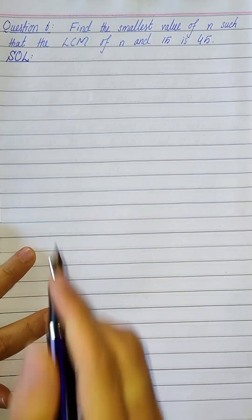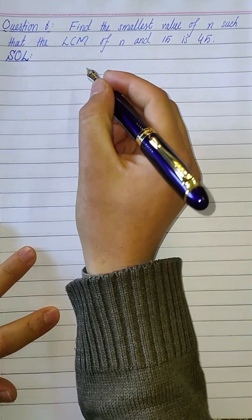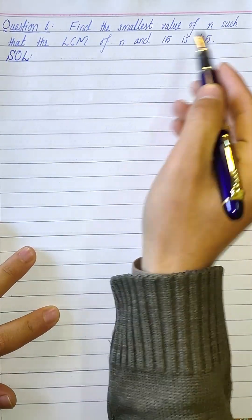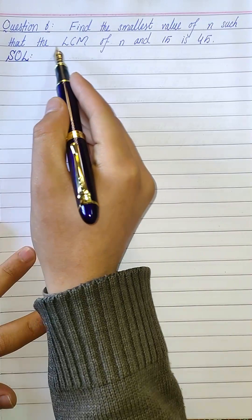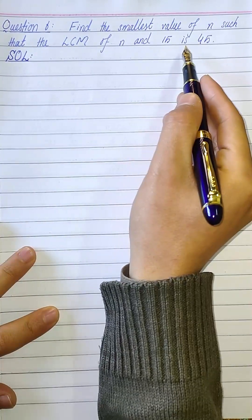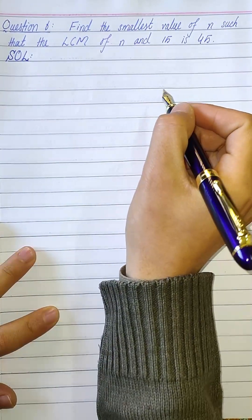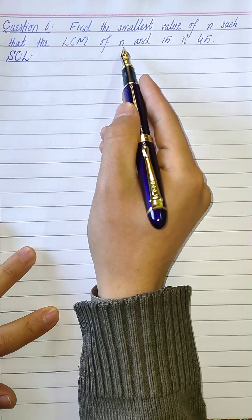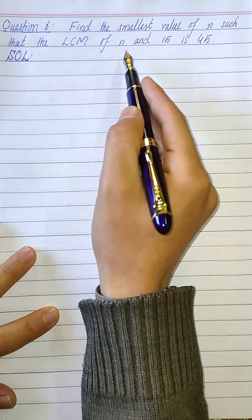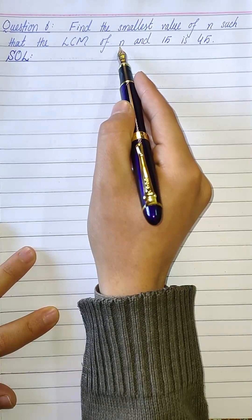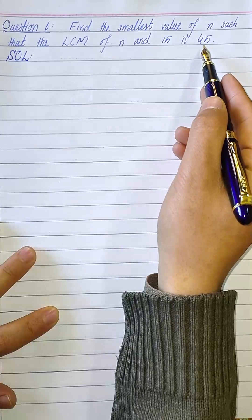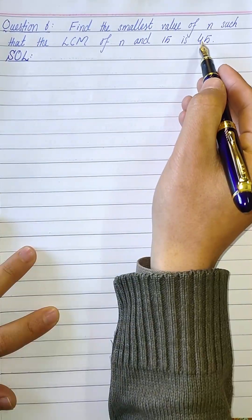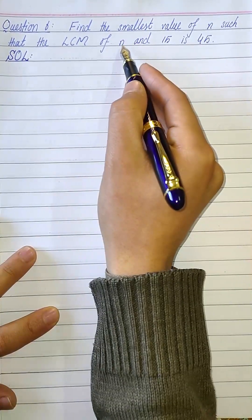Question number six from exercise 1b: find the smallest value of n such that the LCM of n and 15 is 45. In this question we have to find the smallest value of n such that the LCM of n and 15 is 45.